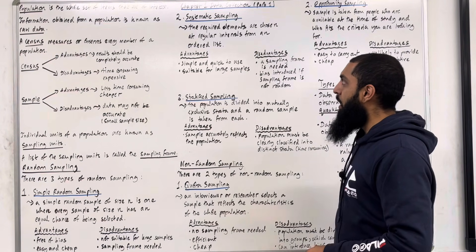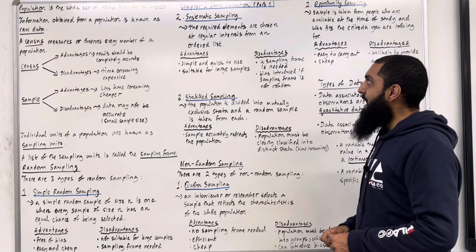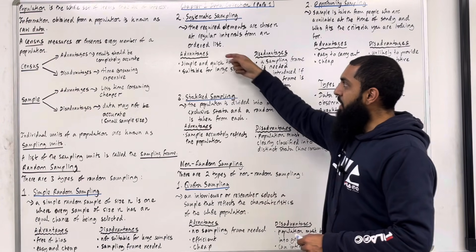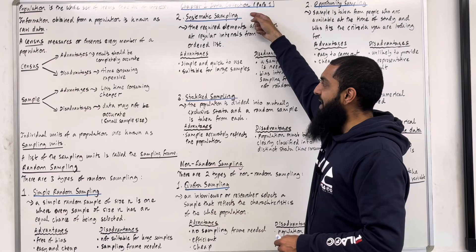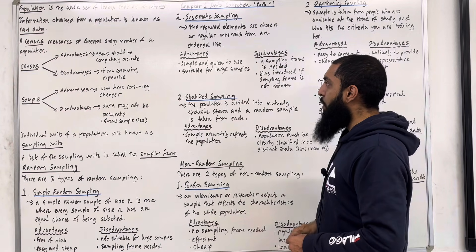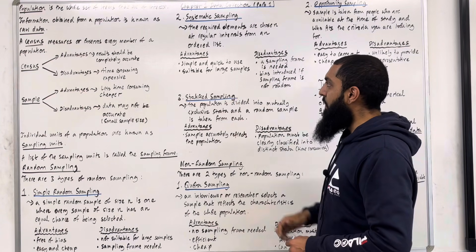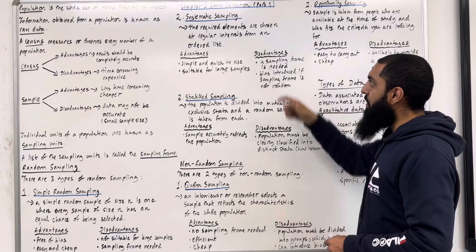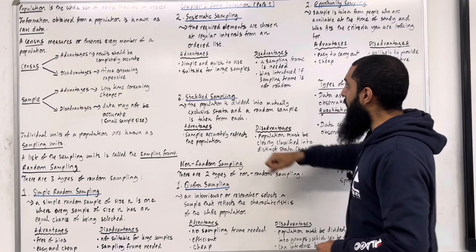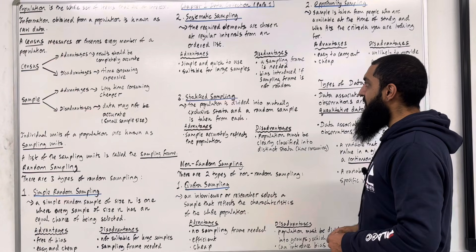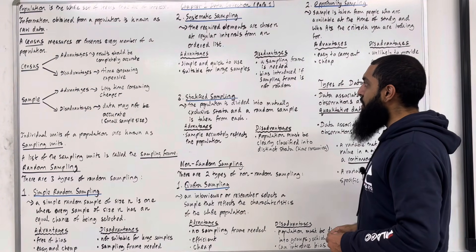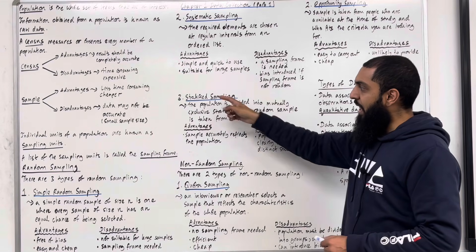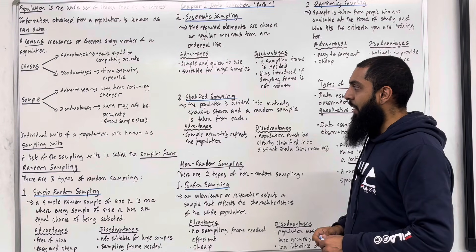Moving on to systematic sampling. The required elements are chosen at regular intervals from an ordered list. The advantages of using systematic sampling are: number one, simple and quick to use; number two, suitable for large samples. The disadvantages are: number one, a sampling frame is needed; number two, bias is introduced if the sampling frame is not random.